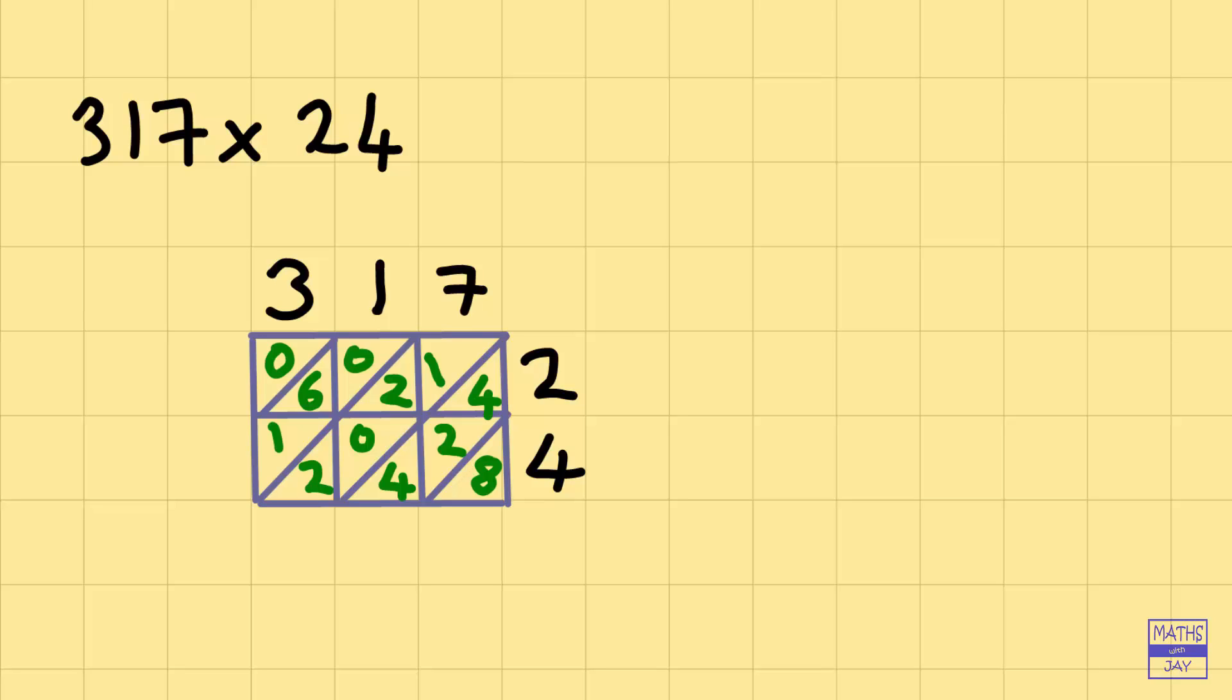And now just looking at the diagonals. So underneath our first diagonal, we've got the number 8. And then the next diagonal has three numbers in it: 4 and 2 and 4. So they add up to 6 plus 4 is 10. So that's a 0, and we carry a 1 into the next diagonal.